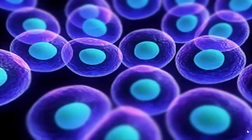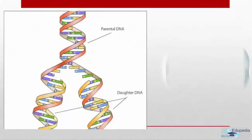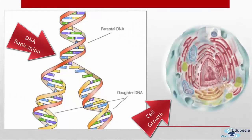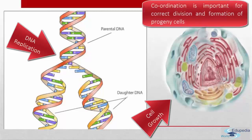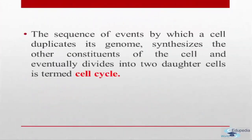Cell division is a very important process in all living organisms. During the division of a cell, DNA replication and cell growth also take place. All these processes have to take place in a coordinated manner to ensure correct division and formation of progeny cells. The sequence of events by which a cell duplicates its genome, synthesizes the other constituents of the cell, and eventually divides into two daughter cells is termed as the cell cycle.